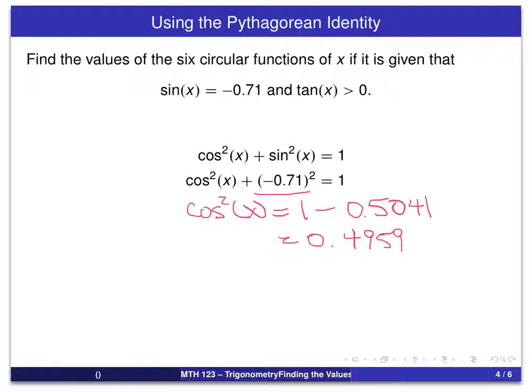Because we've already determined that x is in the third quadrant, we know that cosine of x is negative, and so we can conclude cosine of x equals minus the square root of 0.4959. Now, we can always haul out our calculator and get a decimal approximation for this value. But in reality, it's not really necessary. We can leave, at least for the time being, the cosine as minus this square root.